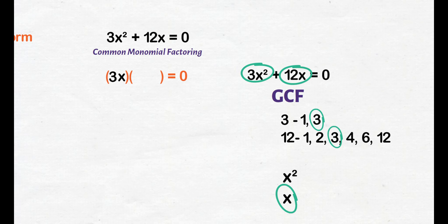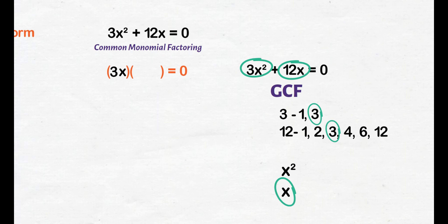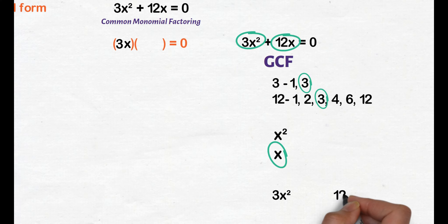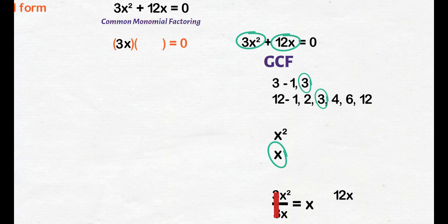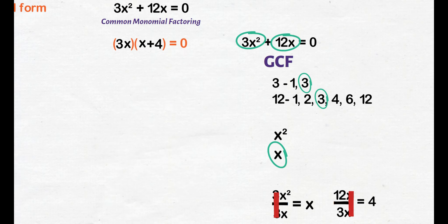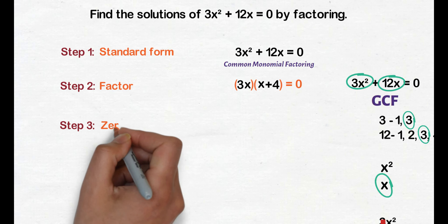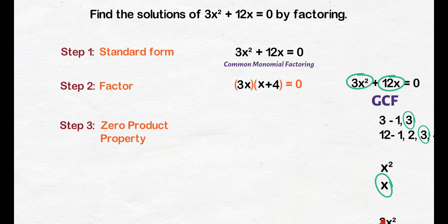Para naman makuha ang binomial factor, i-divide lang natin ang original equation sa nakuha nating GCF na 3x. 3x squared divided by 3x is x — ilagay natin sa pangalawang parentheses. Next, 12x divided by 3x is 4 — ilagay din natin sa pangalawang parentheses. So, meron tayong mga factors na 3x at x plus 4. Step 3, apply the zero product property by setting each factor equal to 0. We get 3x equals 0 and x plus 4 equals 0.